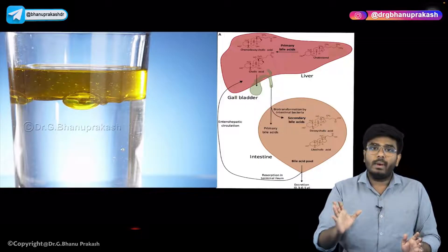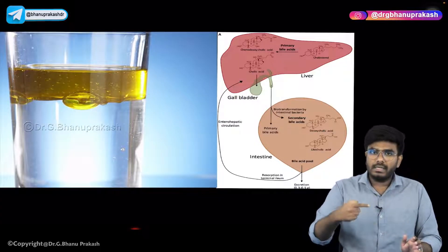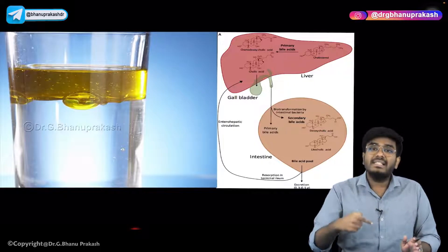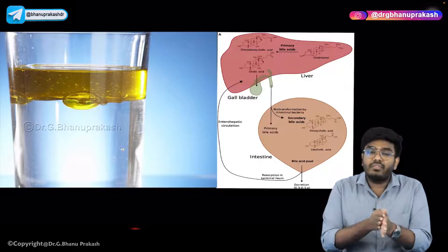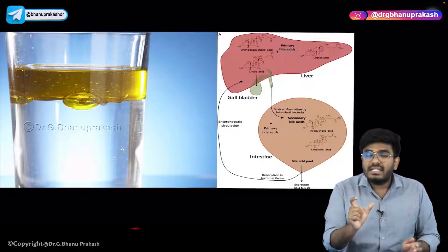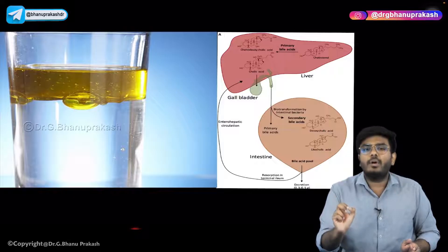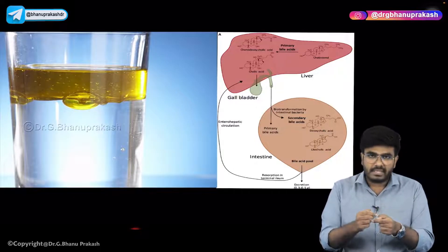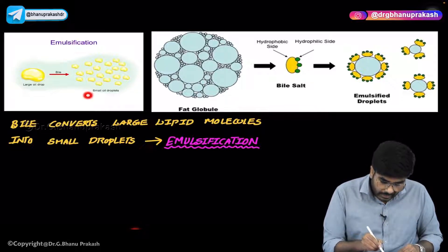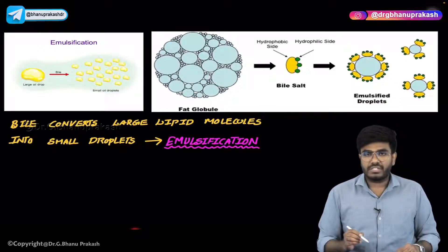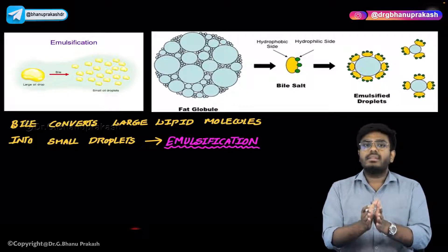What does bile do? Bile acts just like soap. Whenever you put a little detergent or soap into a glass of water with oil, they mix immediately. This process is called emulsification. The bile coming from the gallbladder performs emulsification. During emulsification, the large large lipid droplets which are not mixing with water are chopped down into small small lipid droplets, which can then easily mix with the lipases. So a large lipid droplet is converted into small droplets with the help of bile — this is emulsification. These fats can then be easily digested, and lipases can act on them for digestion of lipids.